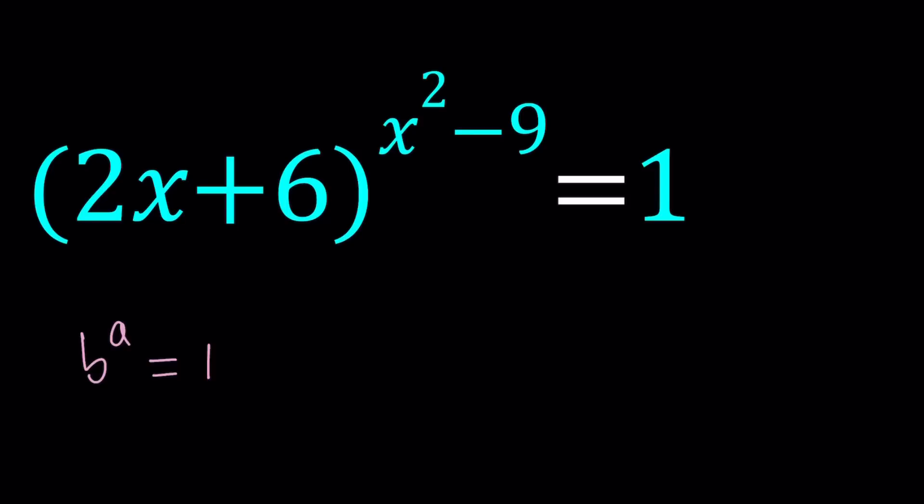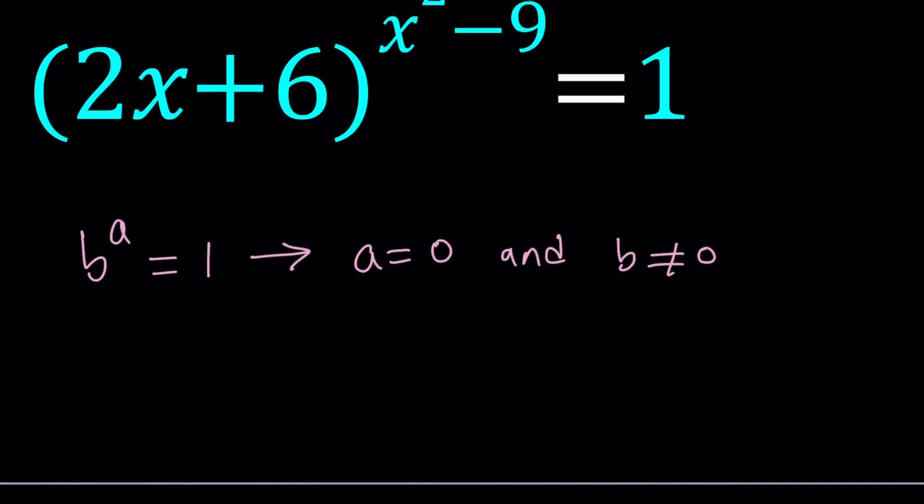So we end up with 3 cases. The first case is a equals 0 and b does not equal 0. So you know that they have to be satisfied at the same time. It's not or, it's and. That's the first case. The second case, obviously, the first case gives us any non-zero number to the 0 power is equal to 1. No matter how large or how small or whether a number is positive or negative, when you raise it to the 0 power, the answer is always 1, as long as the base is not equal to 0.